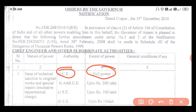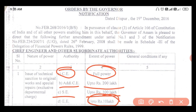Assam notification के अनुसार, additional chief engineer के पास technical sanction करने के powers up to 200 lakh हैं। Superintendent engineer के पास up to 100 lakh, यानी one crore तक के technical sanction करने के powers हैं। Executive engineer के पास near about 10 lakh तक technical sanction करने के powers हैं। यह Government of Assam का notification है।